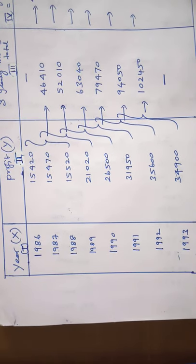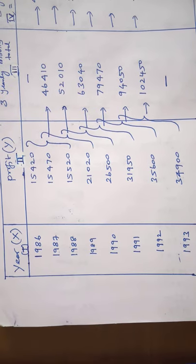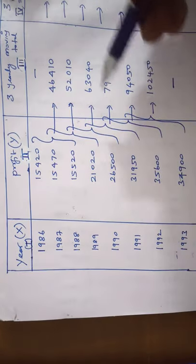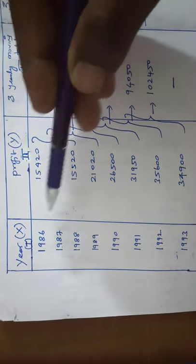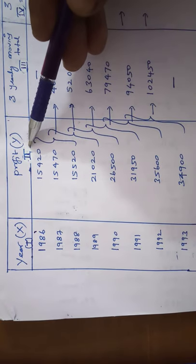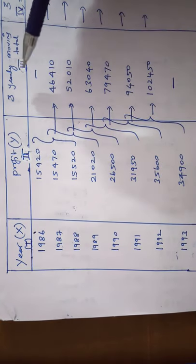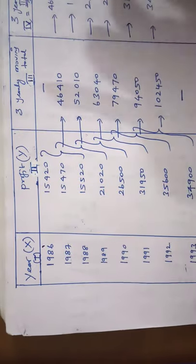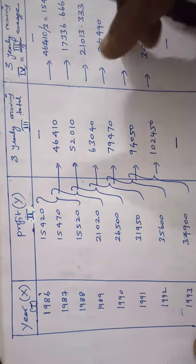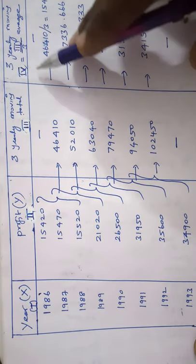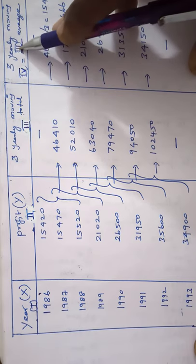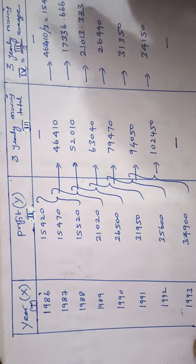This can be taken in column number 1. Year is taken as X and the corresponding profit values are taken as Y. The year is taken in column 1, profit is taken in column 2. Next column is 3-yearly moving total, this is column number 3. And last column is 3-yearly moving average. This fourth column is equal to third column divided by 3.